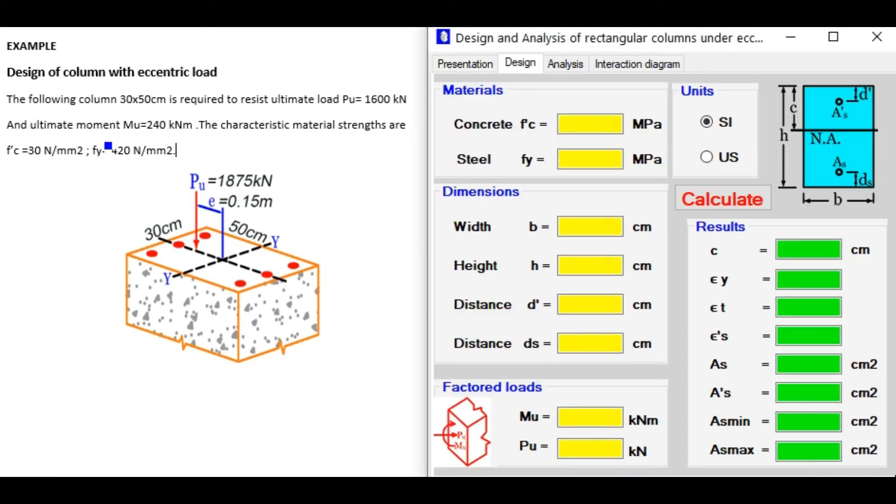Concrete F'C 30 MPa, FY 420 MPa, width 30 cm, height 50 cm, D' 5 cm, DS 5 cm.